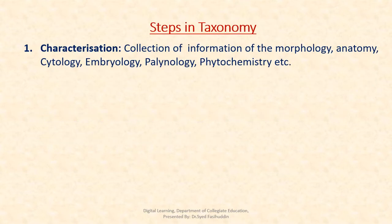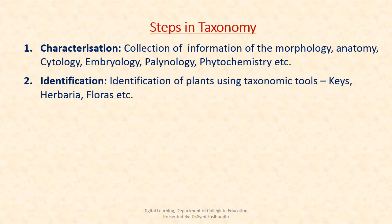The steps in taxonomy: the first step is characterization — the collection of information from the fields like morphology, anatomy, cytology, embryology, palynology, phytochemistry and other branches of botany. The second step is identification — the identification of plants is done using various taxonomic tools like keys, herbaria, flora, etc.